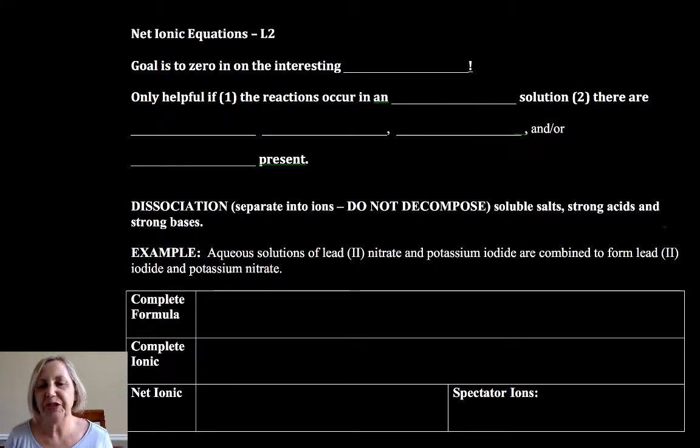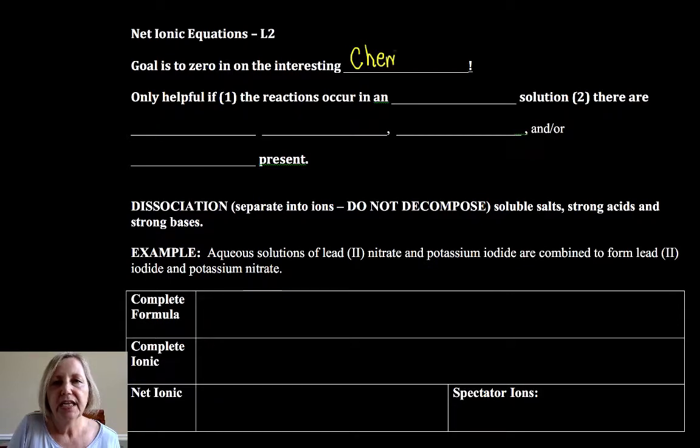Hi and welcome to this little video segment. One of the things in writing chemical reactions that is really handy is to write a chemical reaction using what's called a net ionic equation. The goal of this is to zero in on the interesting chemistry.